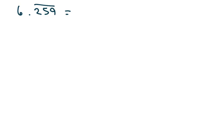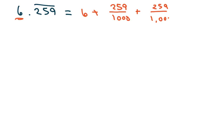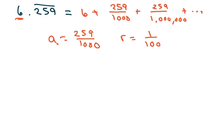The next one is 6.2̄5̄9̄. When you have something like this, we're going to leave the 6 and add it last. We'll take care of the decimal part like we already know how to do: 6 plus 259 over 1000, plus 259 over 1,000,000, and so on. My first term is 259 over 1000, and my R is 1 over 1000.